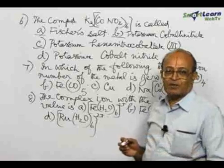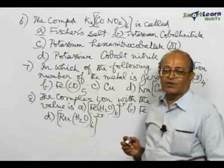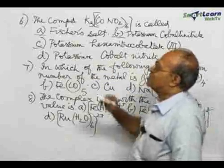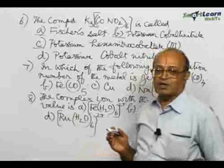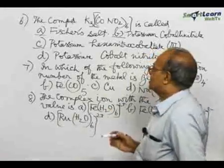D: Potassium cobaltnitrite. Usually this sort of nomenclature is not followed. So for this question, we find A, B, and C are all correct. D is not correct.